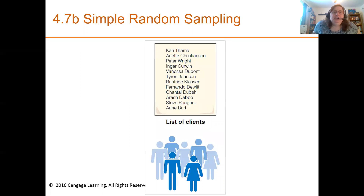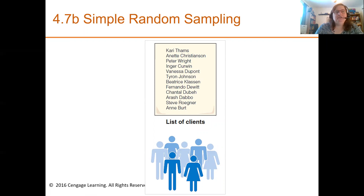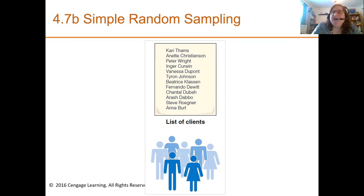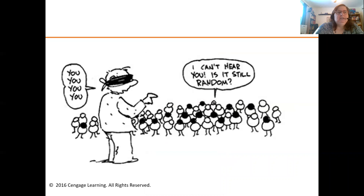Let's do a brief review of different kinds of sampling. Simple random sampling: we have our list, close our eyes, put all the names in a bag, and randomly choose the number of names we've decided to include in our sample — like this blindfolded figure choosing randomly.